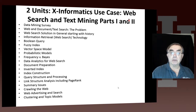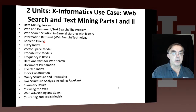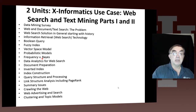It has two units in this section. We will do a little survey of data mining, state the problem for document and web search, and discuss it from a historical point of view. We discuss information retrieval and various important concepts such as Boolean query, fuzzy indices, vector space models, and probabilistic models. It's pretty important to understand the difference between the Bayesian point of view and the frequency point of view.